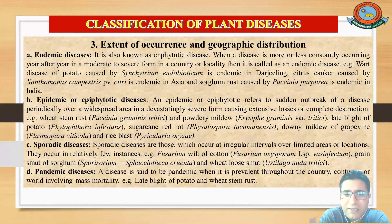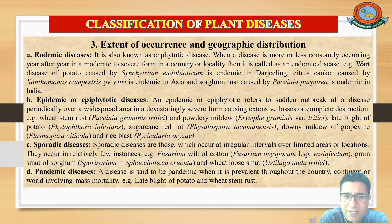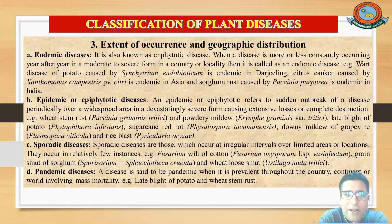Another example is citrus canker, a well-known disease caused by Xanthomonas, which is most prevalent only in Asia. A third example is sorghum rust, caused by Puccinia purpurea, which occurs only in India. Because these diseases are restricted to a specific country or region, they are classified as endemic or amphytotic diseases.